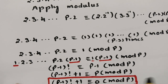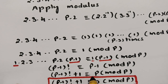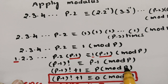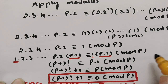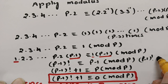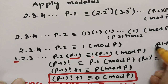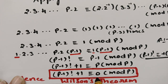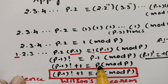So (p−1)! ≡ p−1 (mod p). Since there is a −1, adding 1 to both sides gives (p−1)! + 1 ≡ p (mod p). The remainder when p is divided by p is 0, so this is (p−1)! + 1 ≡ 0 (mod p).